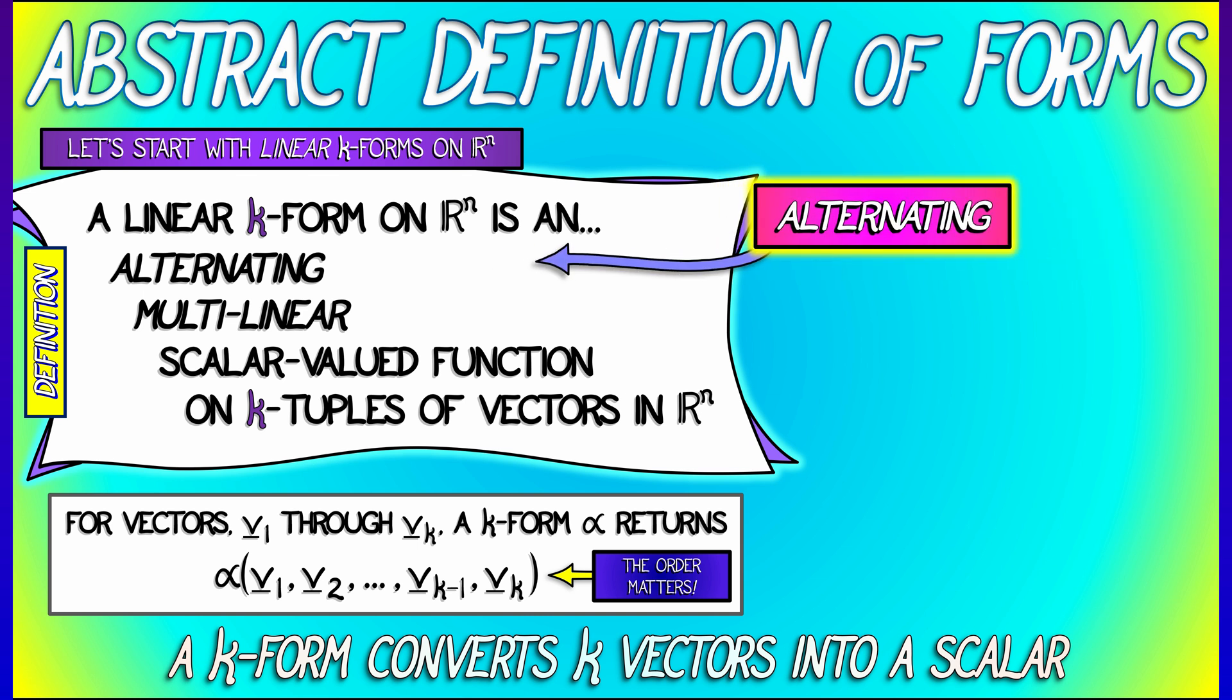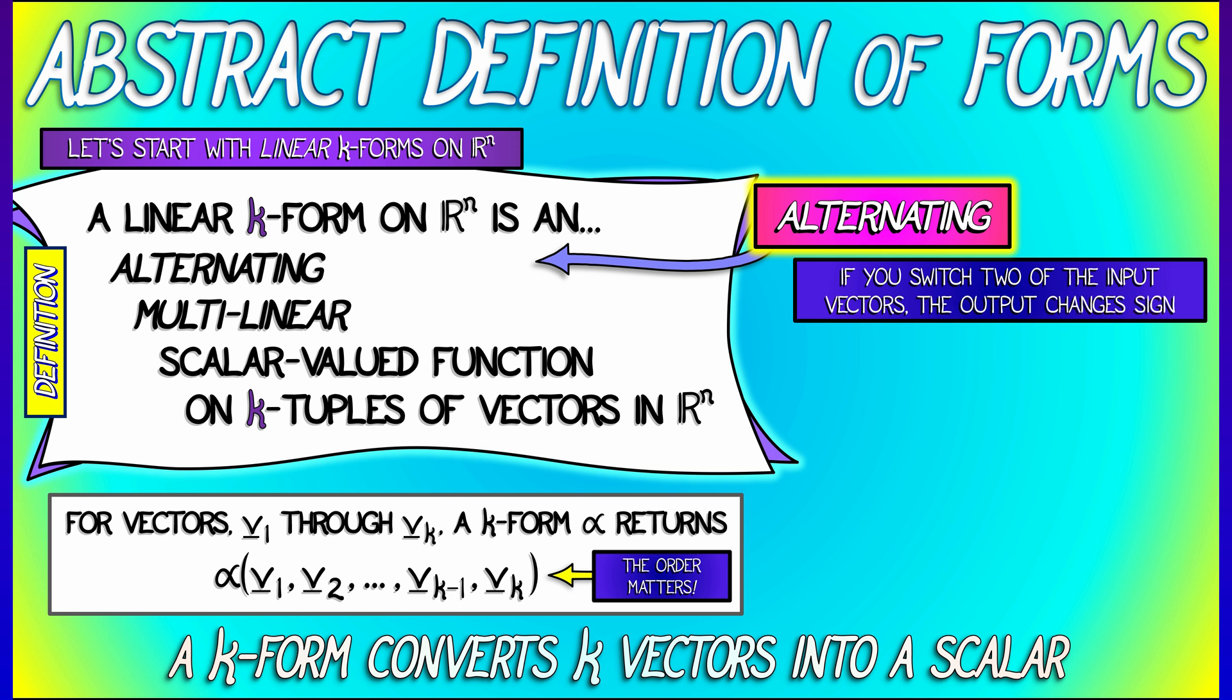What does alternating mean? That means that if you switch two of the input vectors, then the output changes its sign. Just like, let's see, where have I seen something like that before? Oh yeah, just like the scalar triple product, right? You reverse one of the things, the output changes its sign.